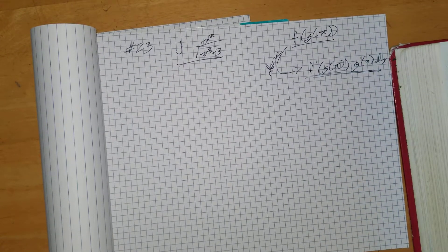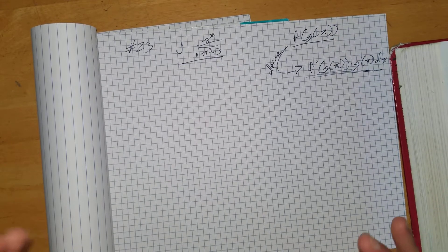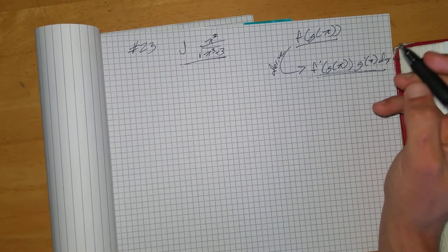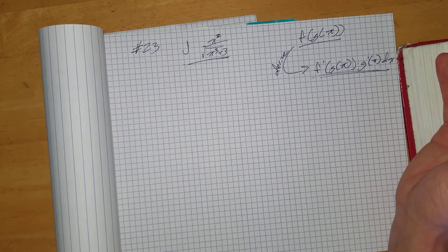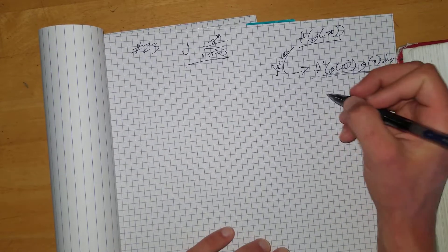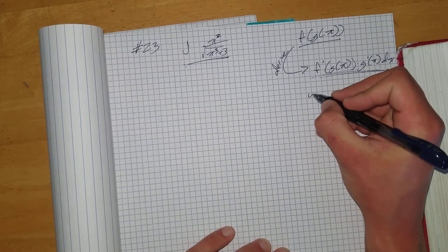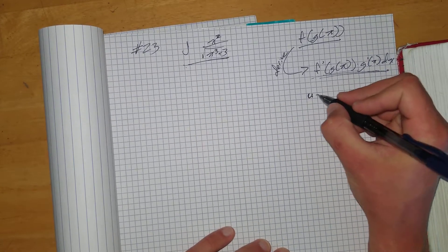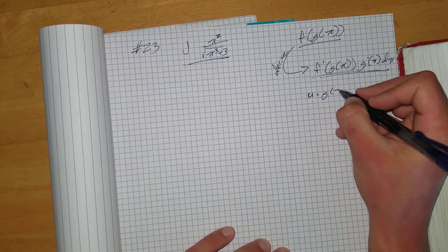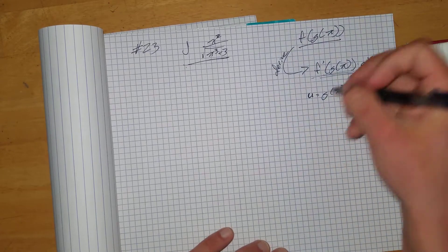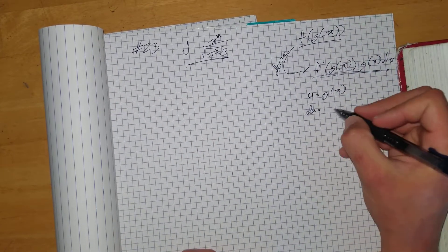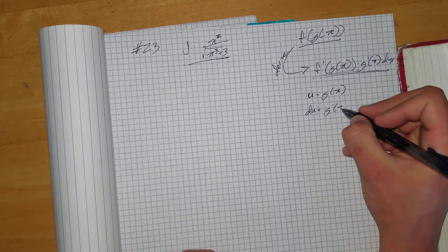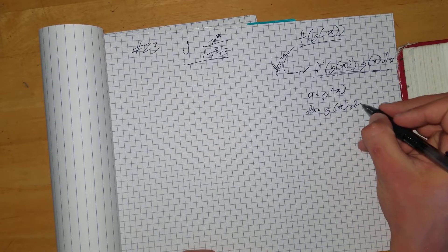What we want to do is we want to substitute something in for g of x so that we're not dealing with a composite function. So what we're going to do is we're going to find g of x and we're going to substitute u in for g of x. And when we substitute u in for g of x, we have to find a du that is g prime of x dx.